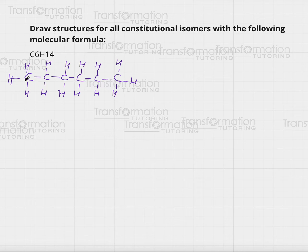Let's go ahead and count our carbons: 1, 2, 3, 4, 5, 6—6 carbons. Hydrogens: 1, 2, 3, 4, 5, 6, 7, 8, 9, 10, 11, 12, 13, 14. This is one of the molecules that we can have: 6 carbons, 14 hydrogens.